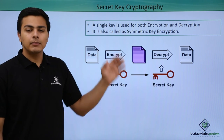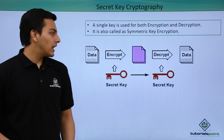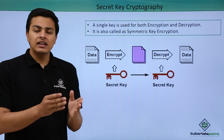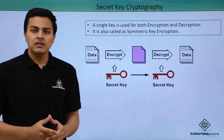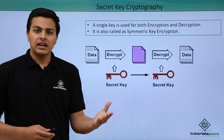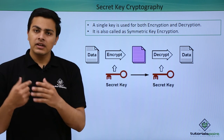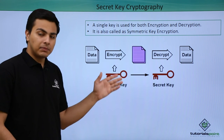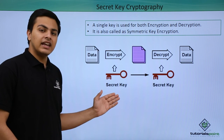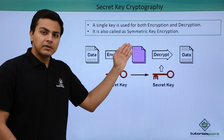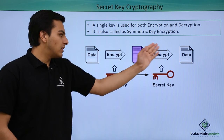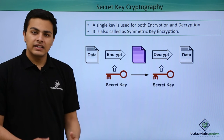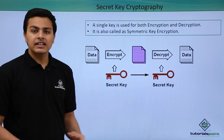First we will talk about secret key cryptography, which is also called symmetric key encryption. This means that the key used during encryption is the same key used during decryption. Here you can see that while encrypting the data, our key is a secret key, and once we have our encrypted data and want to decrypt it, we use the same key that was used to encrypt the data.